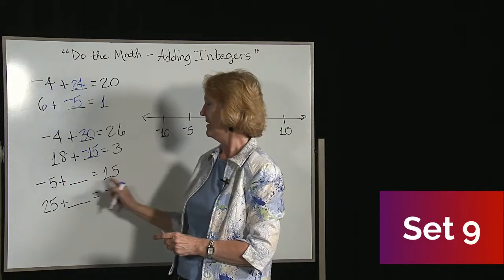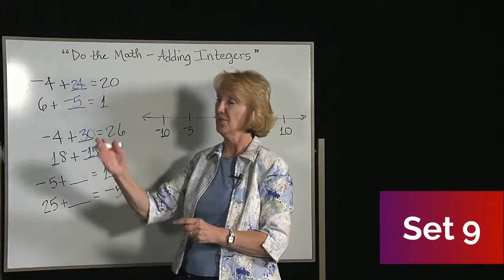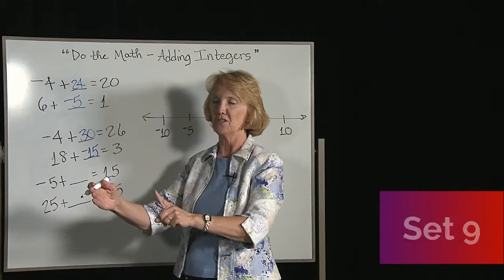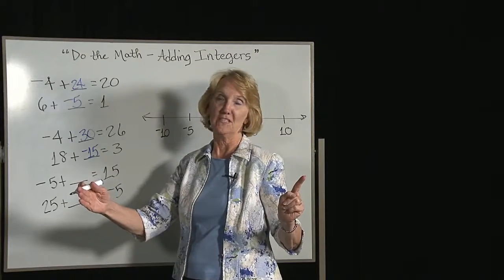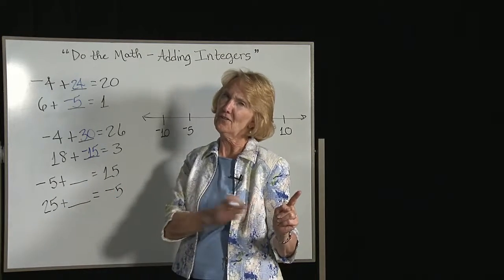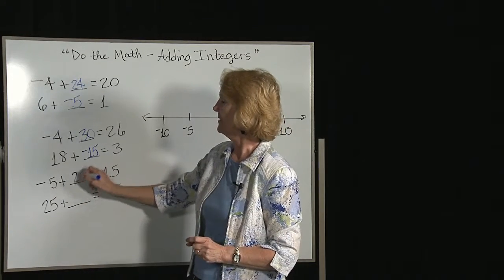On this one, we start out in the negatives and we end up in the positive. If you're at negative 5, you need 5 just to get to 0. Once you're at 0, you need 15 to get to 15, so you added 5 and 15, which means you added 20.